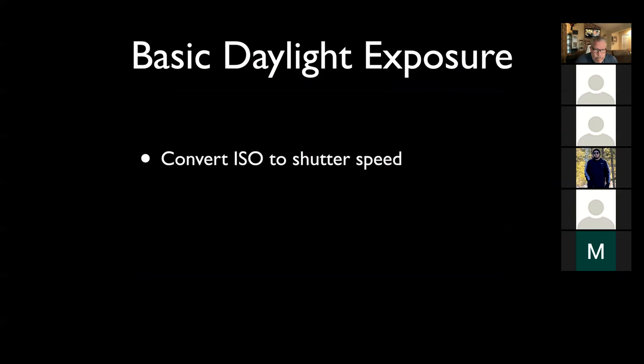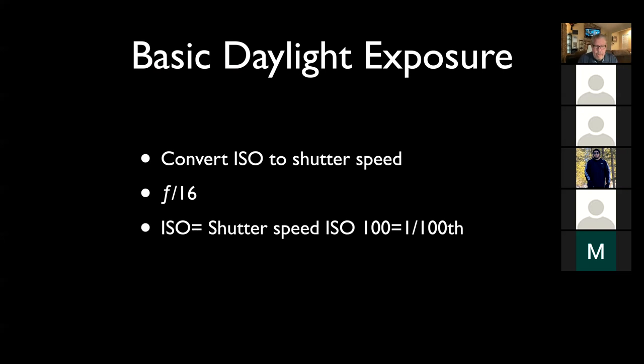Basic Daylight Exposure: you convert the ISO of your camera to the shutter speed. So you take your ISO and change it to shutter speed. For example, if your ISO is at 100, you convert your shutter speed to one one-hundredth of a second and then put it at f/16. So your shutter speed would be one one-hundredth of a second at f/16.